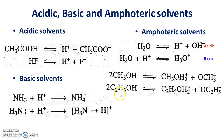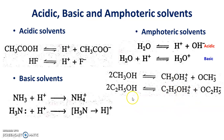In ethanol, one molecule transfers a proton and is converted into OC2H5-, while the other ethanol molecule accepts the proton to form a protonated alcohol molecule. Since both acceptance and donation of protons take place, ethanol is also an amphoteric solvent.